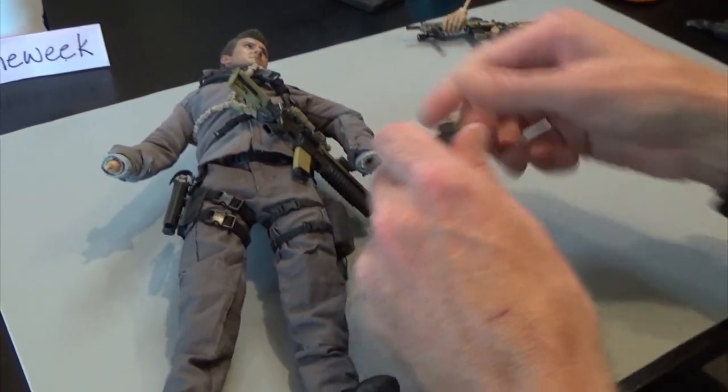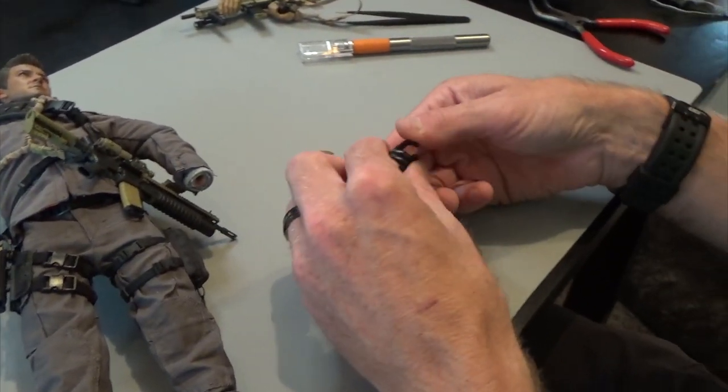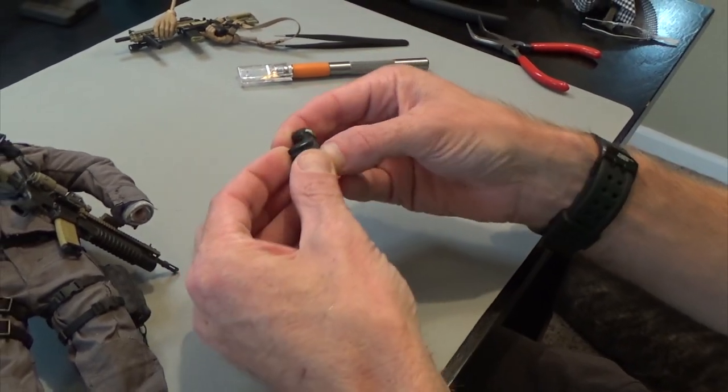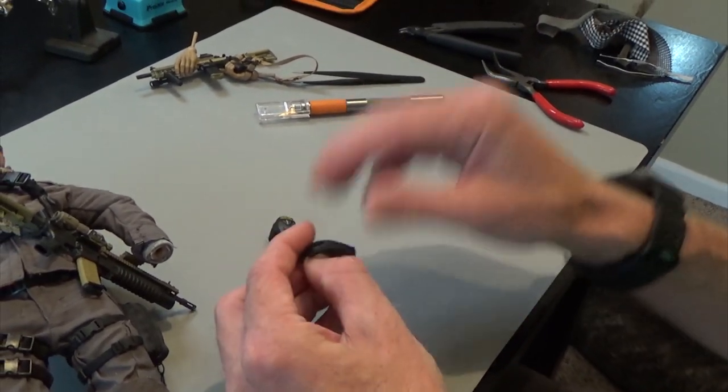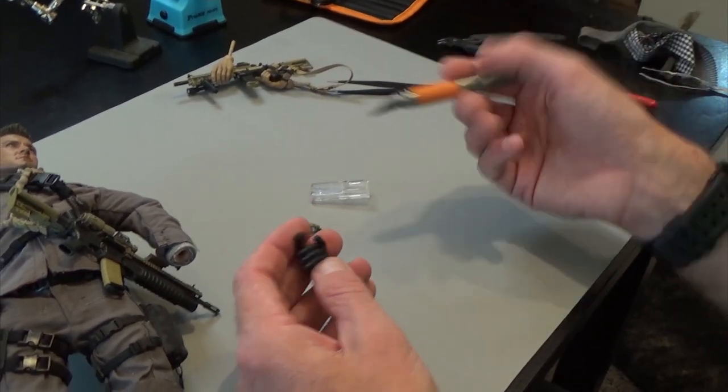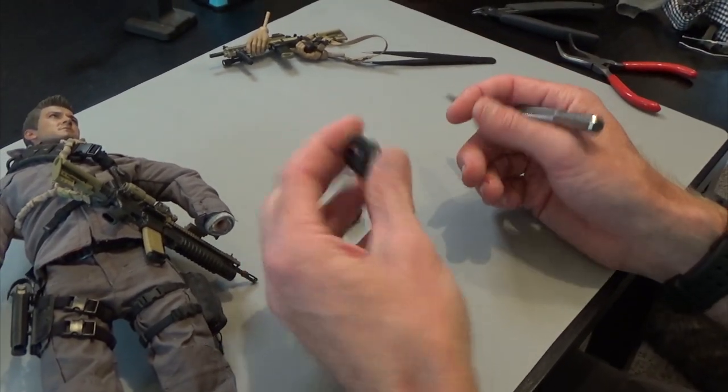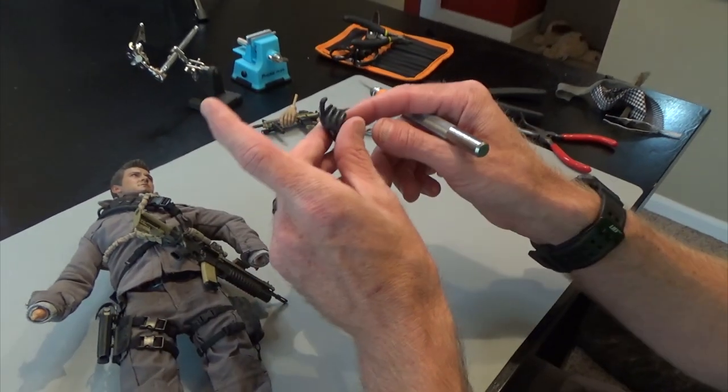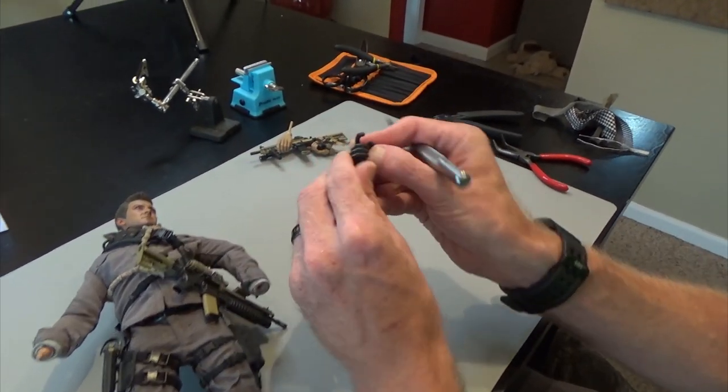These hands right here, this figure is almost done. These hands are Damtoys hands, and these are a harder mold. They used harder plastic back in the day. Now the new stuff, like the Easy and Simple stuff, uses more of a PVC material so it's more squishy. But these are hard plastic, and you can see there is no separation in the fingers.